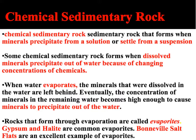We're going to start by talking about the chemical sedimentary rocks. The chemical sedimentary rocks form from one of two processes: either they precipitate out from a solution — meaning they come out of a solution as that solution settles — or they settle from a suspension.